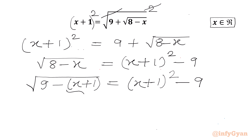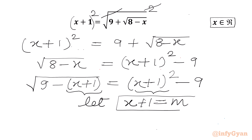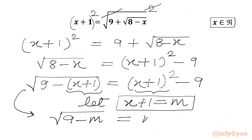Now in both the LHS and RHS we have x plus 1, so it is better to use substitution. Let x plus 1 equal to m. So our equation becomes square root of 9 minus m equals m squared minus 9.